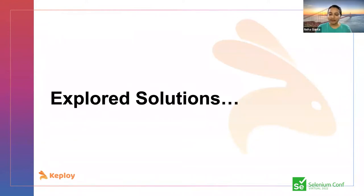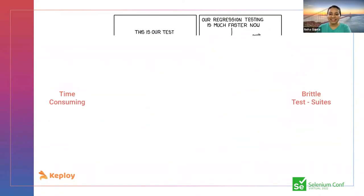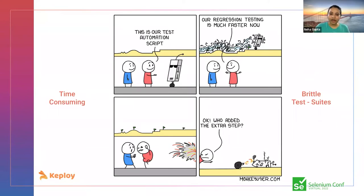We initially started with a simple automation test suite — write functional test cases on every release and it should be fine. But the reality was different. Whenever we developed a new feature or made changes to an existing one, those test cases needed to be updated. They were very brittle in terms of reliability versus the time consumed to maintain them.